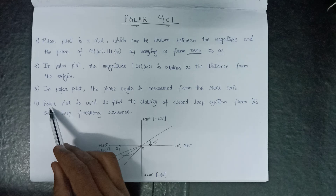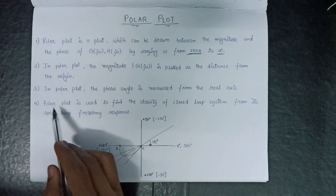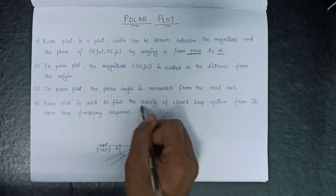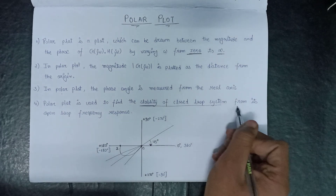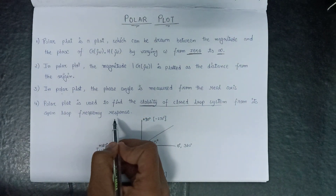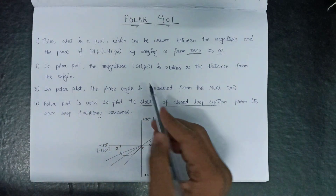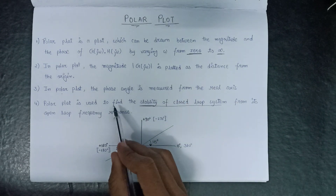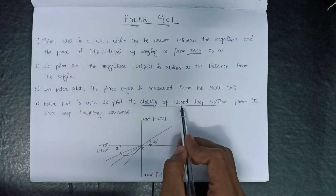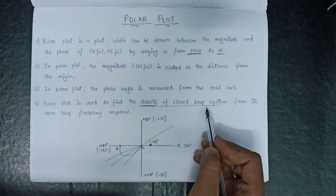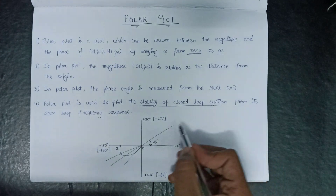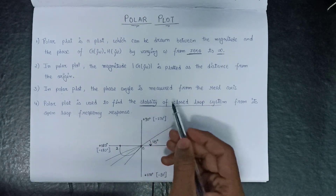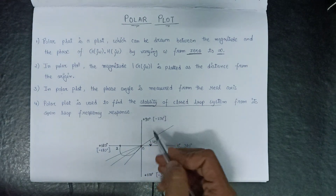Moving on to the fourth point, which is an advantage or use of the polar plot: the polar plot is used to find out the stability of a closed loop system from its open loop frequency response. In a question we are generally given G(s), that is the open loop transfer function, and we need to check whether the closed loop system is stable or not. We can do this by the help of the polar plot.